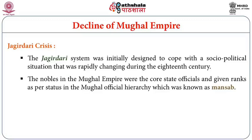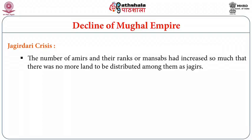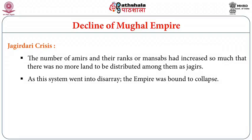The nobles in the Mughal Empire were core state officials, given ranks according to the Mansab hierarchy. Each Mansabdar was paid through an assignment of land revenue. A higher Mansab indicated greater importance before the king. The number of Amirs and their Mansab ranks increased so much that there was no more land to distribute as Jagir, and as this system went into disarray, the empire was bound to collapse.